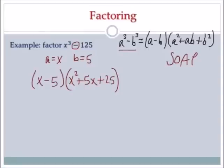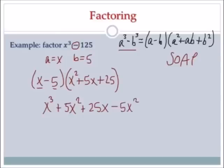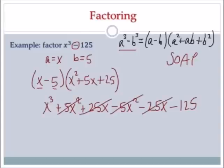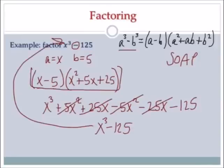And then always a plus for the last sign, b squared is 25. Now I distribute the x and the negative 5 to check. x times x squared is x cubed. x times 5x is 5x squared. x times 25 is 25x. Then I distribute the negative 5: negative 5 times x squared is negative 5x squared. I made a mistake — be careful with those signs. Negative 5 times 5x is negative 25x. Negative 5 times 25 is negative 125. Combining like terms: 5x squared minus 5x squared is 0, and 25x minus 25x is 0. I'm left with x cubed minus 125, which is what I started with. So this is in fact my final answer.